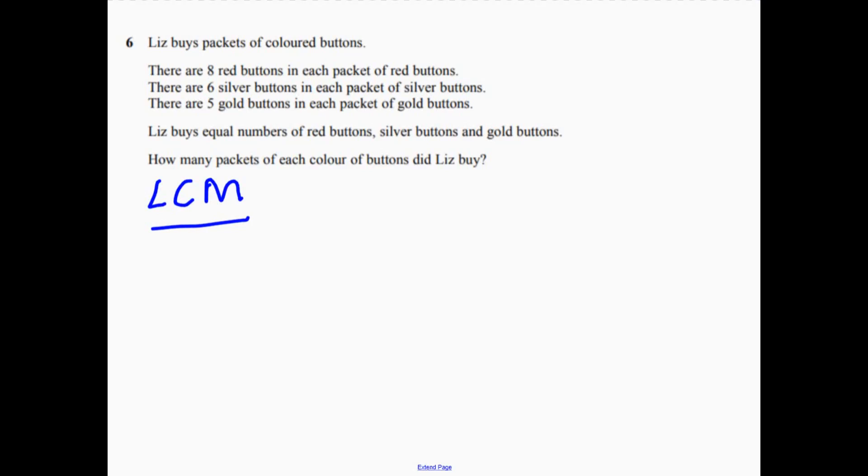Now the easiest way of doing that is to think about, well, 8. 8 is 2 times 2 times 2. Now you could just write out your 8 times table and your 6 times table and your 5 times table until you come to the first number where they're all going to be the same.